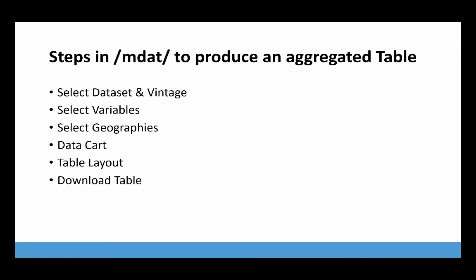These are the steps in the MDAT tool to produce an aggregated table. You select the dataset and vintage when you start. Then you select your variables, then your geographies. Then you can view your data cart and see what you have and decide if you need to make changes. Then you go to the table layout stage where you decide which variables appear in the columns versus the rows. After that, you can view the table or download it into whatever format you need.